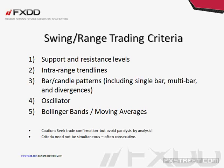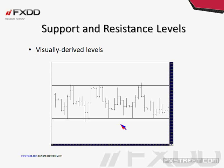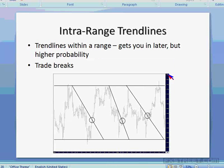I also use Bollinger Bands and moving averages to help confirm turns within ranges. For exits: stop losses in a range trading situation can be determined by price action very straightforwardly. If you're going long near support, you're waiting for the market to tell you you're wrong — that's simply below support, below the last swing low, or above the last swing high if you're short.